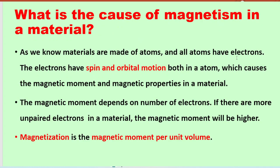What is the cause of magnetism in a material? All materials are made of atoms, and all atoms have electrons. Electrons have spin as well as orbital motion, which causes them to have some magnetic moment and magnetic properties. The magnetic moments also depend on the number of unpaired electrons — if there are more unpaired electrons, the magnetic moments will be higher. Magnetization is defined as the magnetic moment per unit volume.